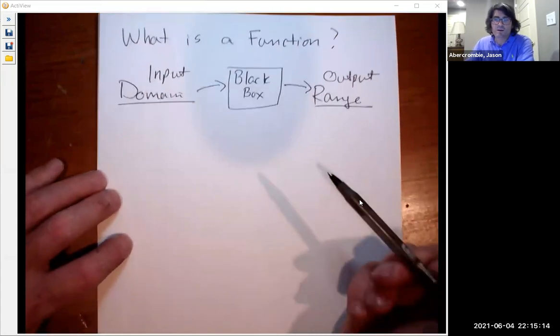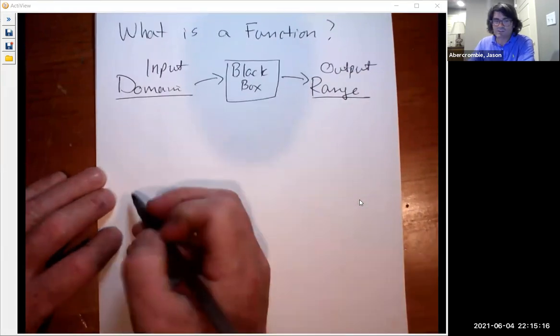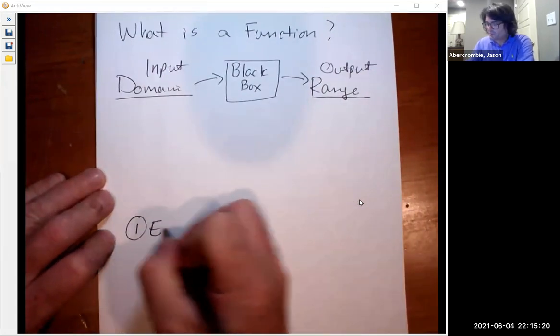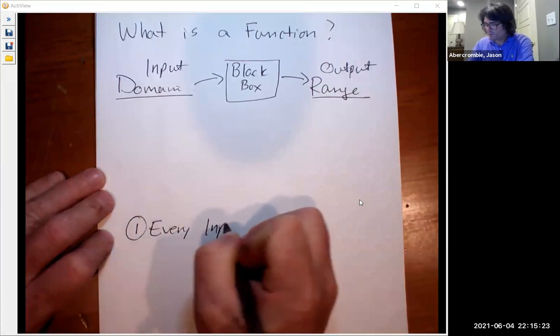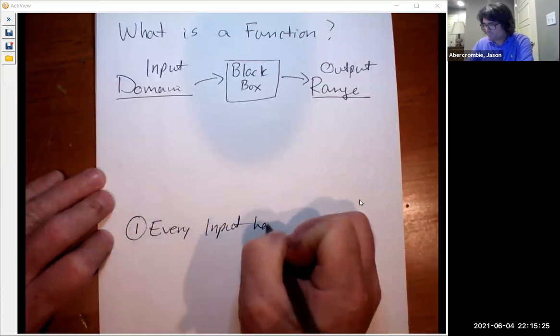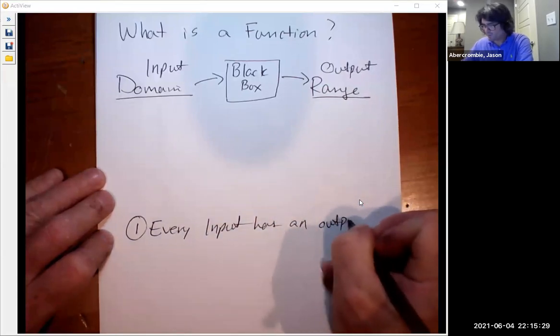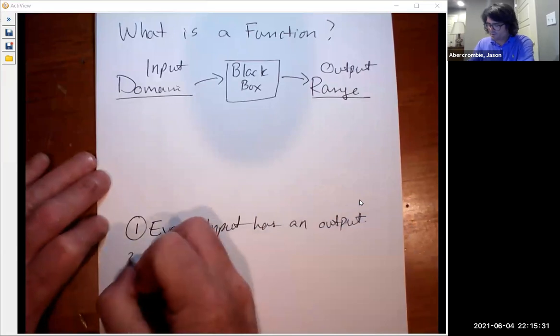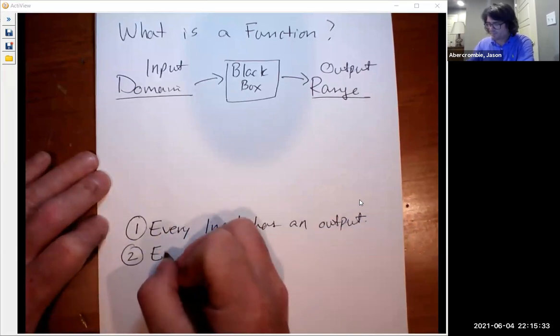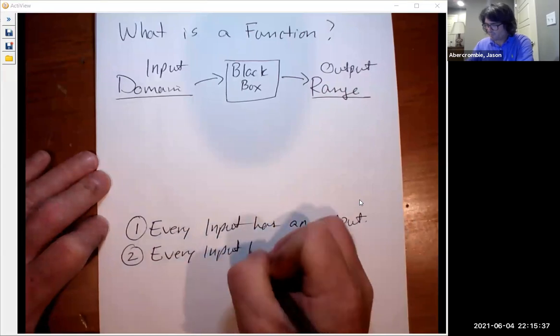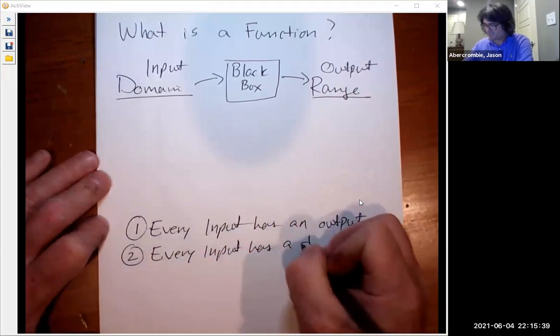There's two requirements for something being a function. The first one is every input has an output. That's the first requirement. And the second is every input has a distinct output.